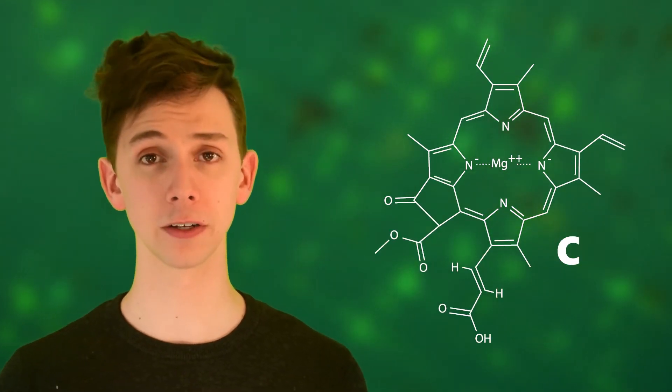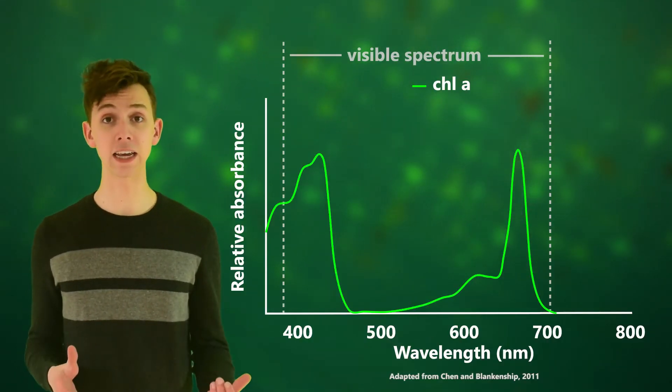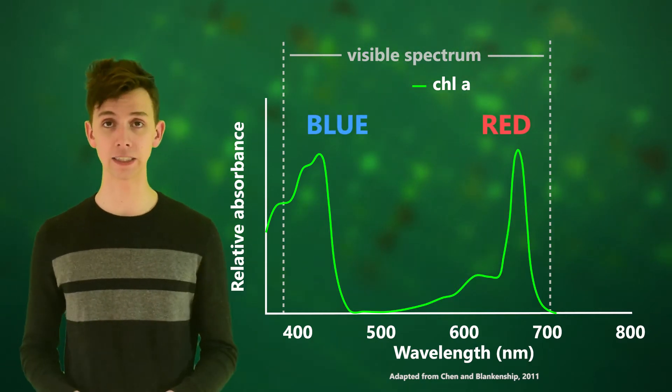Different groups attached to the chlorine ring lead to different chlorophylls, each absorbing different frequencies of light. Almost all photosynthesis uses chlorophyll A, which absorbs blue and red light. For most plants, this works fine, but not perfectly.